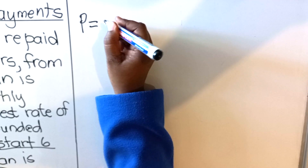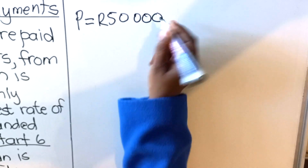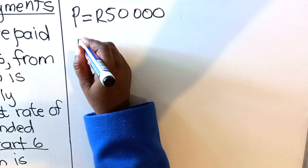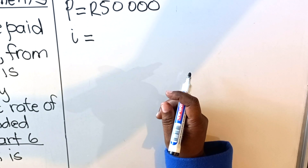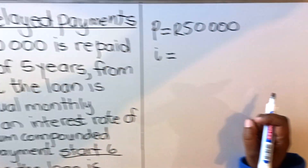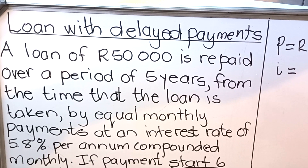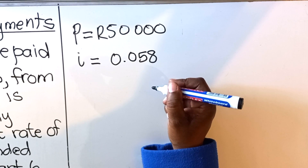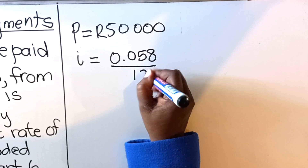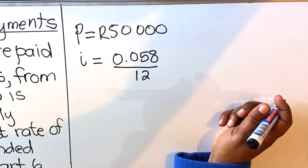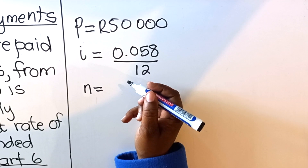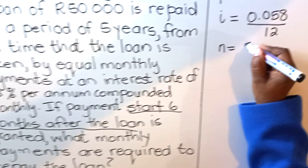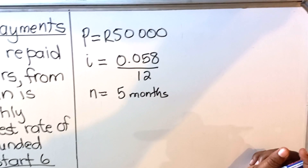Write down what you are given. Your P, the principal, is R50,000. Your interest rate i is 5.8% — divide by 100 to get 0.058. Since it's compounded monthly, divide the interest by 12. Then n: the delay is six months but since every loan is paid one month later, your n will be five months.